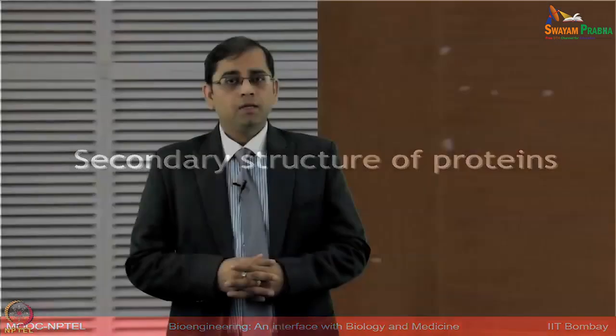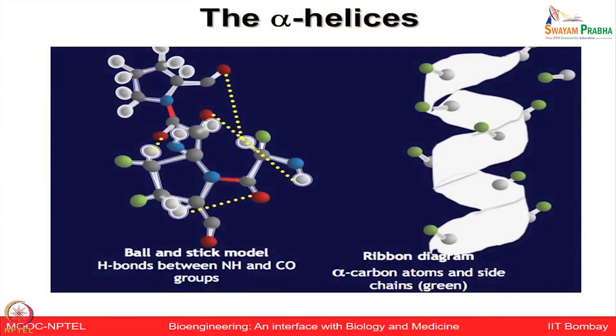Let us now talk about secondary structures. The folding of a polypeptide backbone by means of internal hydrogen bonds between nearby amino acid residues gives rise to a regular arrangement defined as the secondary structure of proteins. The different types — alpha helices and beta sheets — are most commonly observed in secondary structure due to their highly favourable phi and psi angles as described by Ramachandran plots. The amino acid proline tends to disrupt the helix and is often found in bending structures known as reverse turns or beta bends. Let us look at alpha helices first.